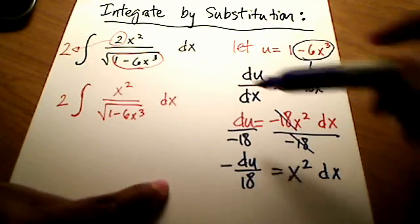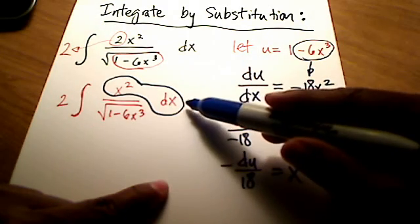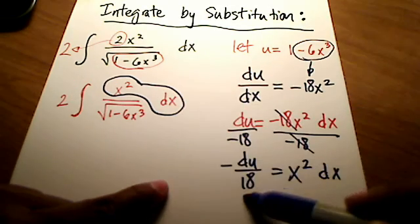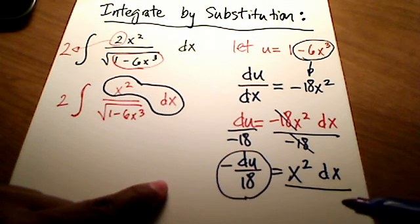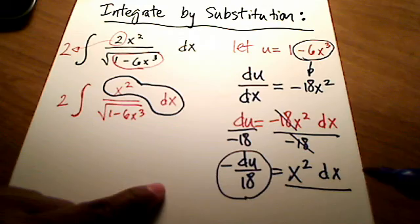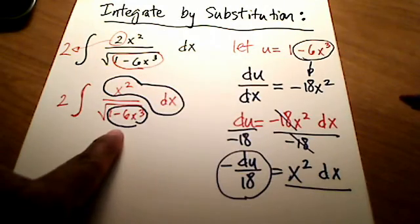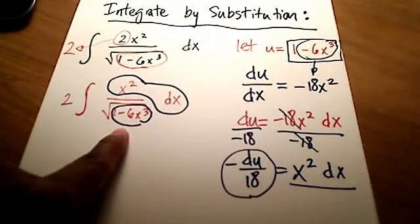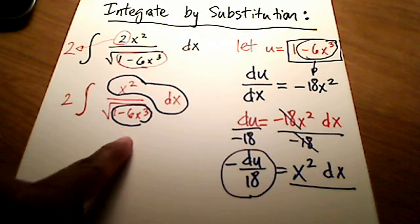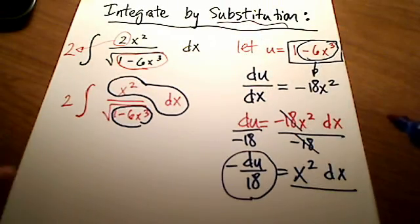So in place of x squared dx, what I'm circling in blue here, in place of this little bubble, I'm going to stick this in. Because anywhere I see an x squared dx, I'm just going to replace it with negative du over 18. In place of this, the thing inside of the square root, this stuff, I'm going to replace that with a u. We can do that. So let's use our substitution rule here. This is all integration by substitution anyway. So here goes.